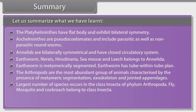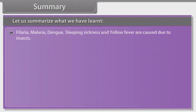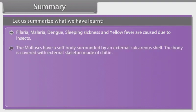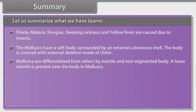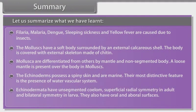Fly, mosquito and cockroach belong to class Insecta. In the Insecta group, the body is divisible into head, thorax and abdomen. They have three pairs of legs and two pairs of wings. Filariasis, malaria, dengue, sleeping sickness and yellow fever are caused by insects. The molluscs have a soft body surrounded by an external calcareous shell. The body of arthropods is covered with an external skeleton made of chitin. Mollusca are differentiated from others by the mantle and non-segmented body; a loose mantle is present over the body in molluscs. The echinoderms possess spiny skin and are marine — their most distinctive feature is the presence of the water vascular system. Echinodermata have unsegmented coelom, superficial radial symmetry in adults and bilateral symmetry in larvae. They also have oral and aboral surfaces.